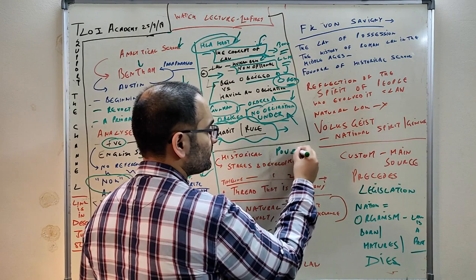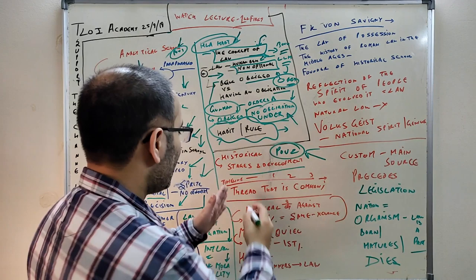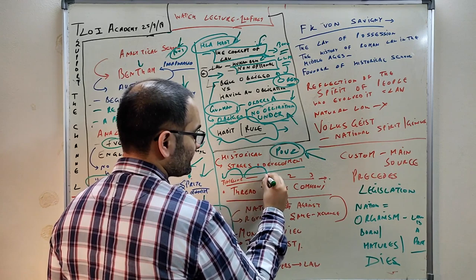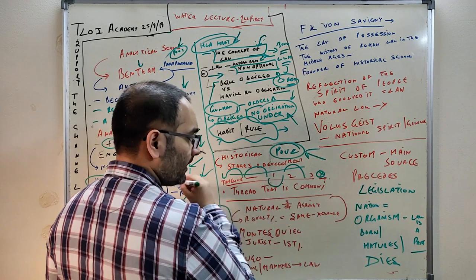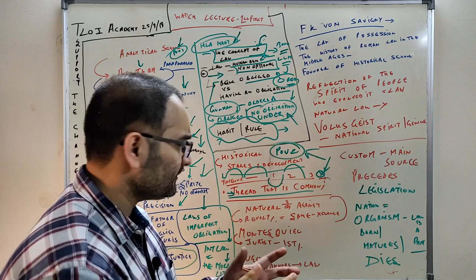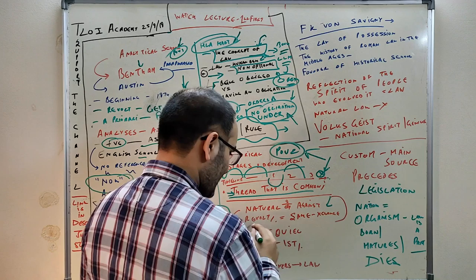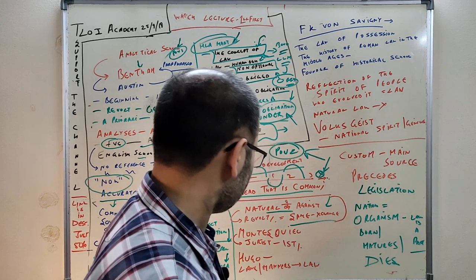Point of view number two is the historical school. They say we will make a timeline - what was the law here, then what development happened, what was negative, what was positive, and how is it today. So Austin's analytical school is focused on the present, while the historical school takes the whole story. They were looking for threads which are common, which bind all people together. They came against the natural school of law which said law never changes and is forever unchanged. They argued, 'How is law the same? Law changes, right?'